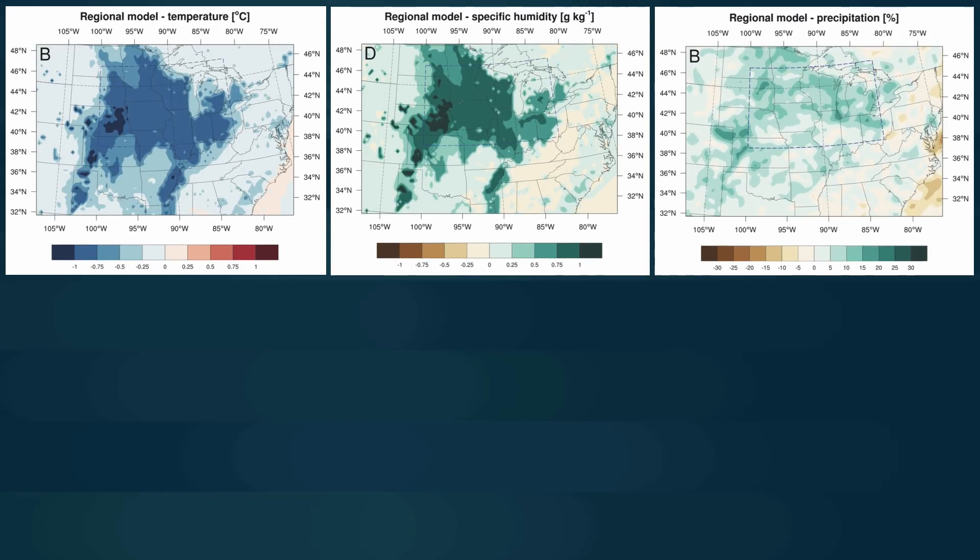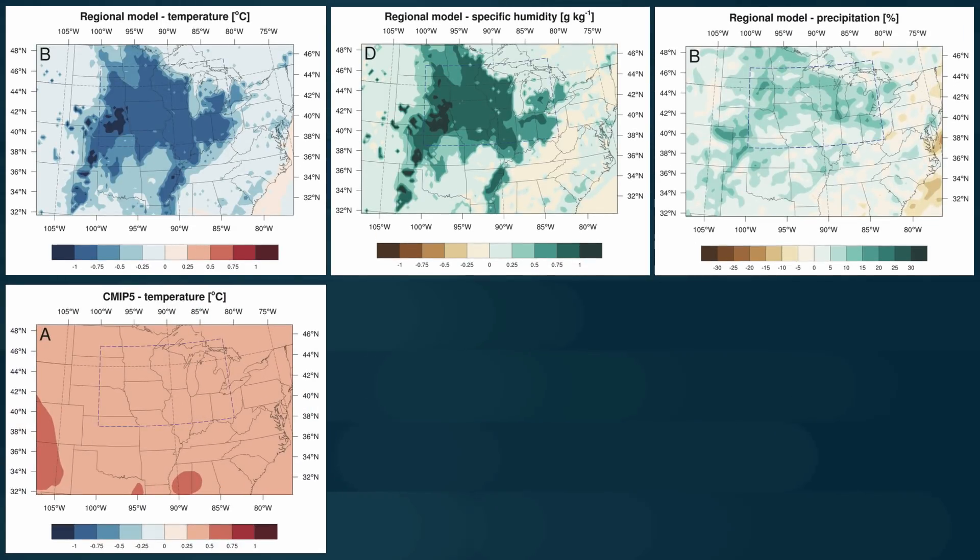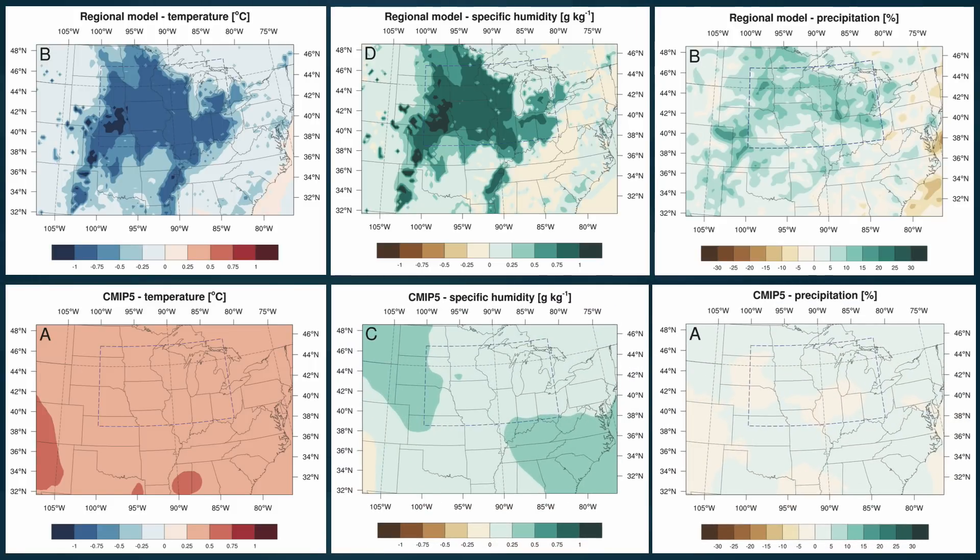The results from these simulations showed warming instead of cooling and small rainfall changes instead of rainfall enhancement, neither of which match historical observations. This suggests that greenhouse gas emissions alone do not explain the observed changes in Midwestern summer climate.